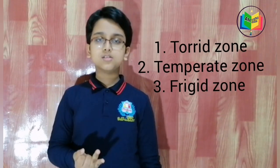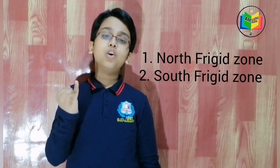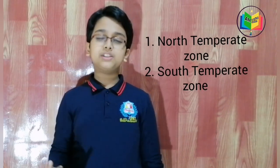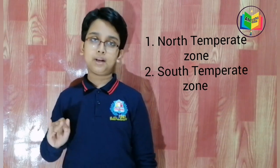First, I will tell you the names of the climate zones before we go to the types. The names are the torrid zone, the temperate zone, and the frigid zone. The frigid zone is divided into the north frigid zone and the south frigid zone. The temperate zone is also divided into the north temperate zone and the south temperate zone.